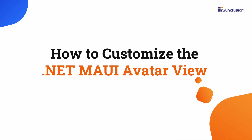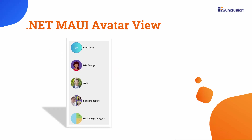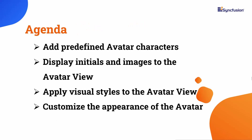Welcome to the .NET MAUI Avatar View Tutorial. In this video, I will show you how to customize the Syncfusion .NET MAUI Avatar View control in a .NET MAUI application. The .NET MAUI Avatar View allows you to create customizable user profile images. You can add images, background colors, icons, and text, making it easy to personalize the look of user profiles in your app. I will demonstrate how to add predefined avatar characters and initials to the avatar view.